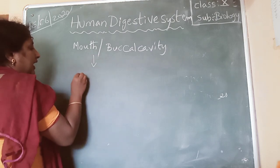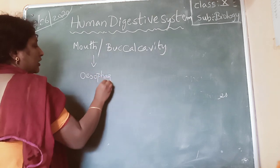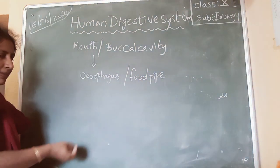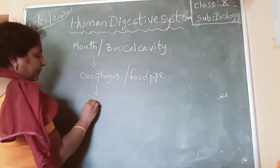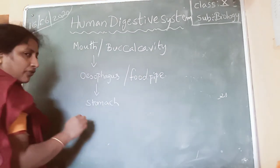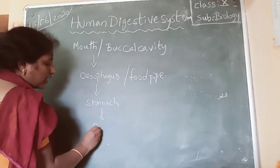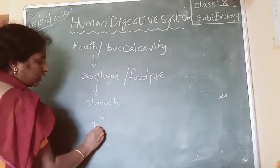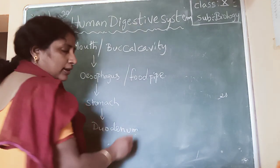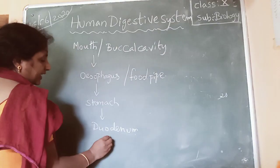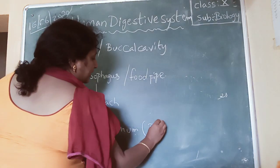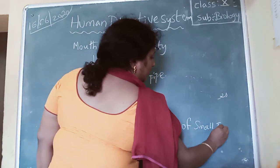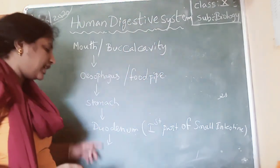Afterwards the food passes into the esophagus, which is also called the food pipe. From the esophagus, the food enters into the stomach. From the stomach, it enters into the small intestine — specifically into the duodenum, which is the first part of the small intestine.